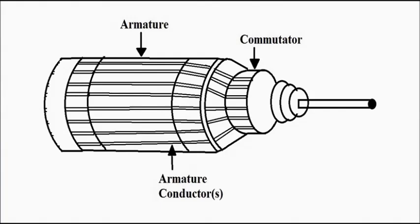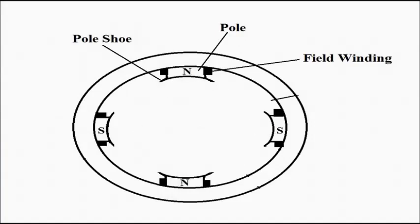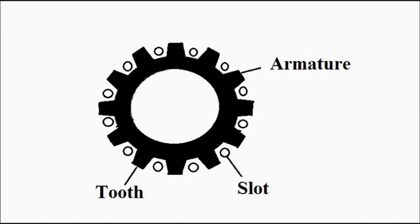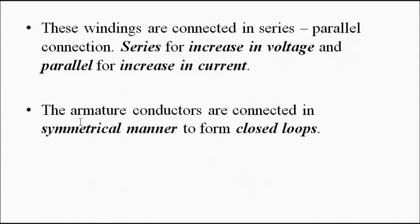The armature core is the rotating or movable part of the DC machine; it rotates in the fixed uniform magnetic field produced by the field system. The armature conductors are connected in a symmetric manner so that a closed loop is formed. These armature windings or conductors are either connected in series — for an increase in voltage — or in parallel, for increasing current. We'll discuss these in detail in upcoming videos.